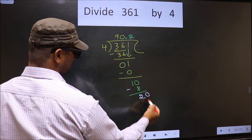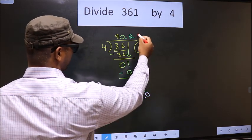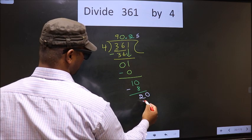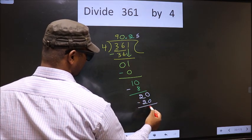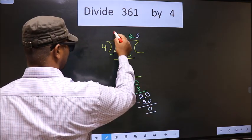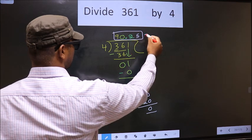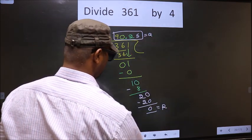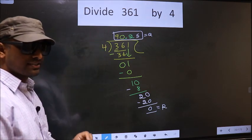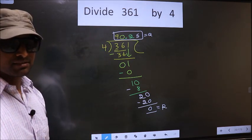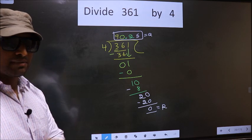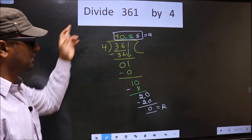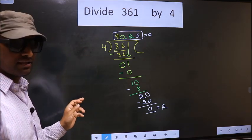We already have the decimal. So, we directly take 0. When do we get 20 in 4 table? 4, 5 is 20. Now, you subtract, you get 0. This is our quotient and this is our remainder. Did you understand where the mistake happens? You should not do that mistake. Am I clear?